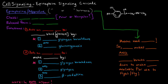In this video, I want to talk about details of the epinephrine signaling cascade. We've been talking about general schemes so far; we're going to talk now about how exactly epinephrine, the hormone, triggers a response in a cell. Epinephrine is also known as adrenaline, and it's typically considered the fight or flight hormone.